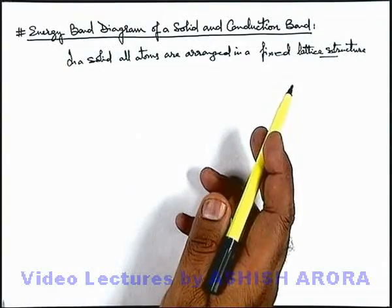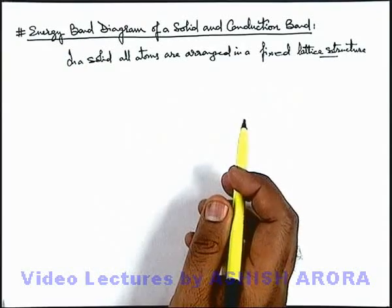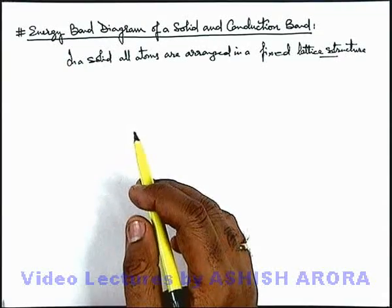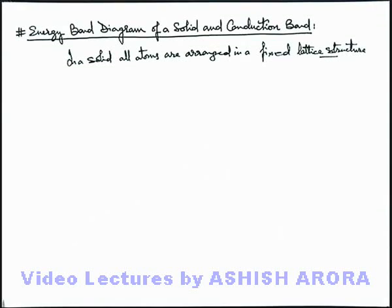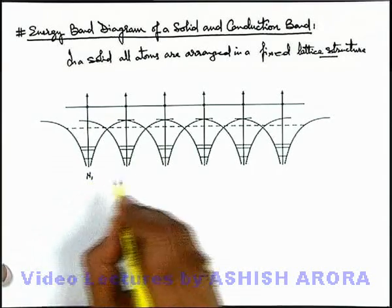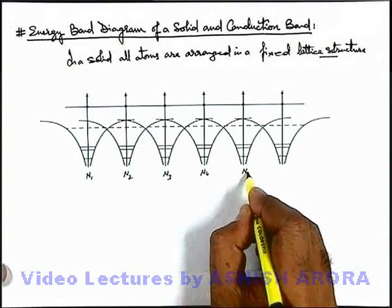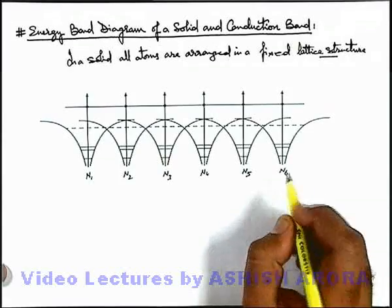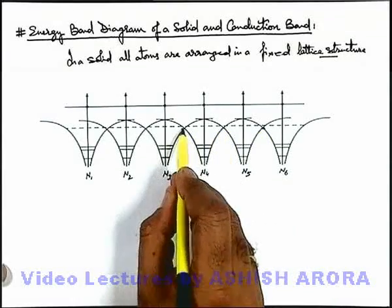In this situation, we can draw the energy band diagram of such a lattice structure in which atoms are arranged at a fixed separation. Similar to how in the previous article we drew the energy band structure for two closely spaced atoms, let's look at the energy band diagram for all atoms arranged at a fixed inter-atomic separation. In this diagram you can see these are the nucleus sites for nuclei N1, N2, N3, N4, and so on. If we draw the energy band diagram of all these nuclei, these energy band diagrams are intersecting at certain locations.